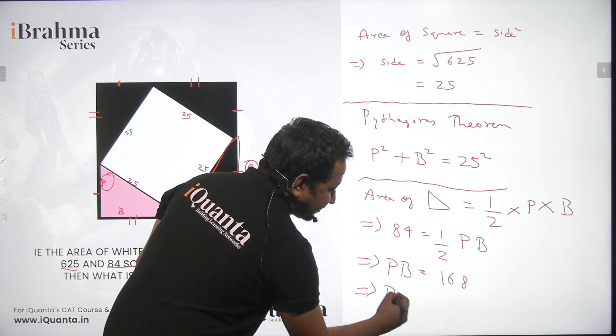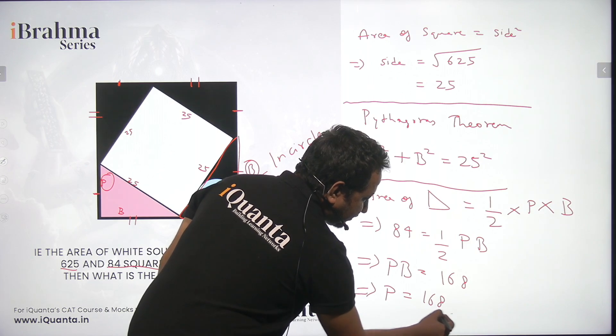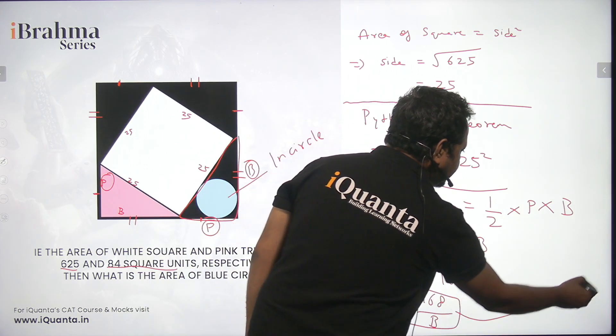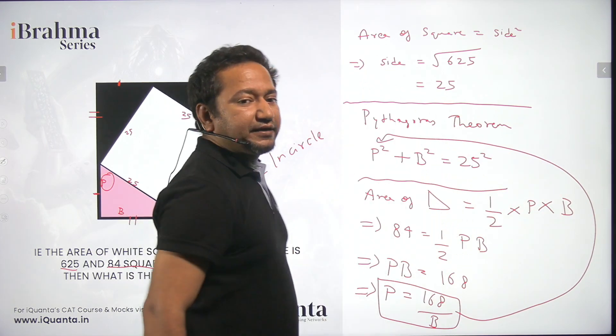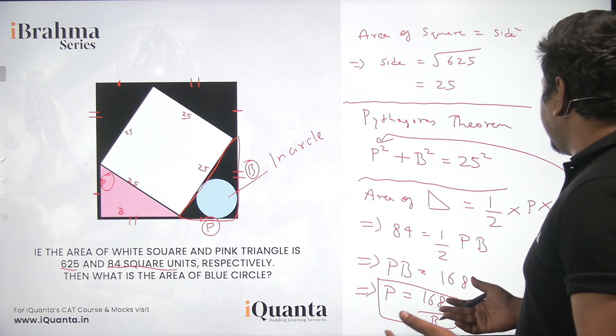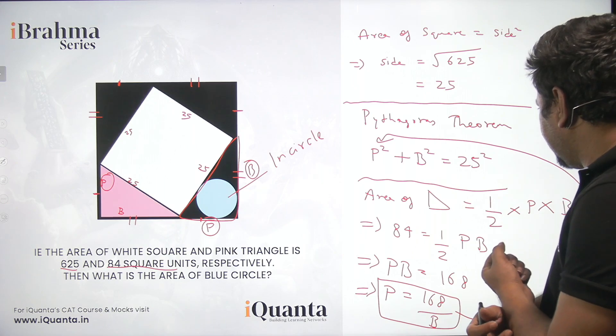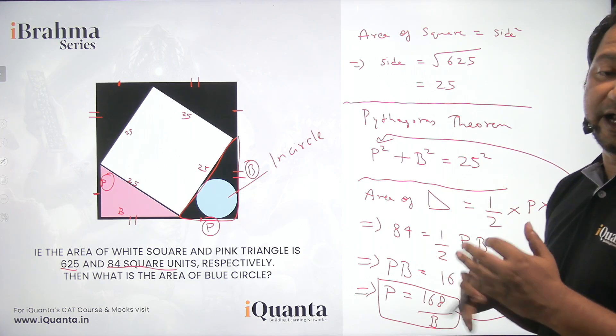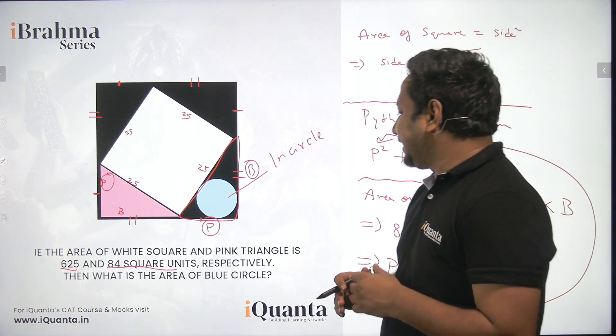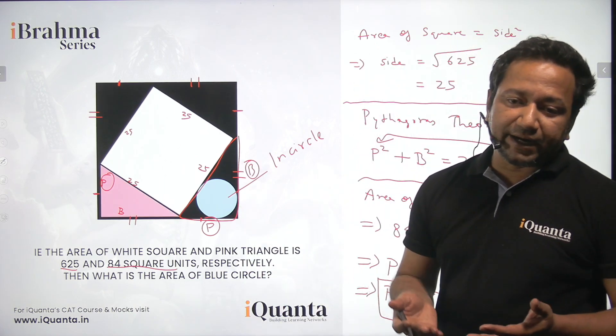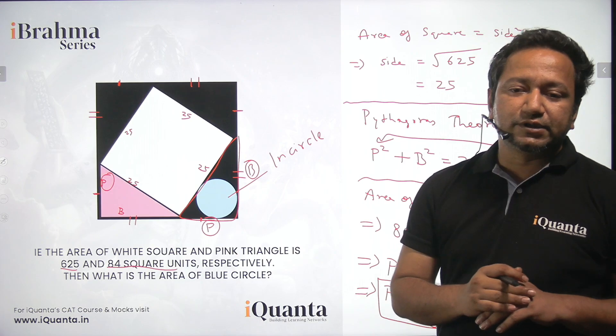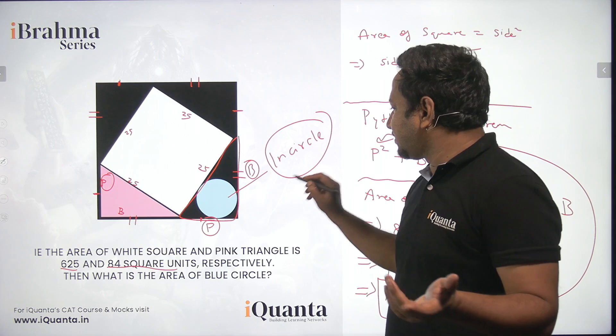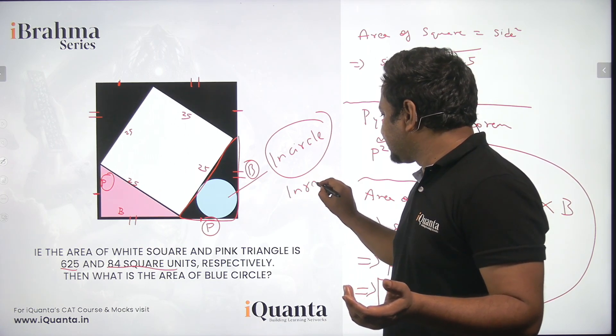Moreover, we can represent the value of P in terms of B. P equals 168 by B, and we can put this value in the Pythagoras theorem, and then we can calculate the value of B and successively the value of P as well. This is what we have to do. And why are we doing it? We're doing this because we want to find the area of the blue circle. So we can find it only if we find the radius of the blue circle. And as the blue circle is in circle, surely the radius of this blue circle will be called as in radius. We'll come to that as well.